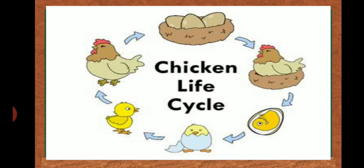We can take the example of a bird. Here I have taken the example of a hen or chicken life cycle. The hen lays eggs, and after laying eggs, it sits over the eggs to keep them warm. This warmth is very important for the development of the embryo. The embryo is the baby which is inside the egg. This keeping-warm process is also known as incubation.